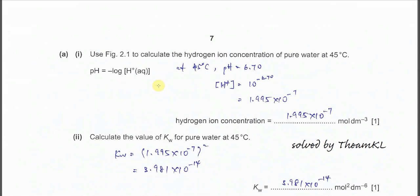Part 2: Use Figure 2.1 to calculate the hydrogen ion concentration of pure water at 45 degrees C. From the figure, you get pH 6.7. Therefore we can easily calculate the concentration of H⁺: it is 10 to the power of negative 6.7, which gives 1.995×10⁻⁷. This is the concentration of the hydrogen ion.